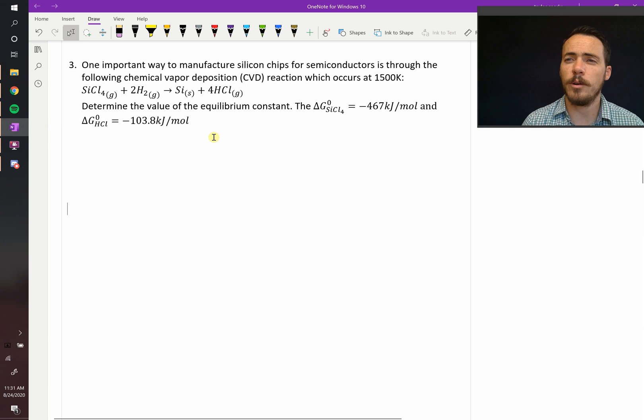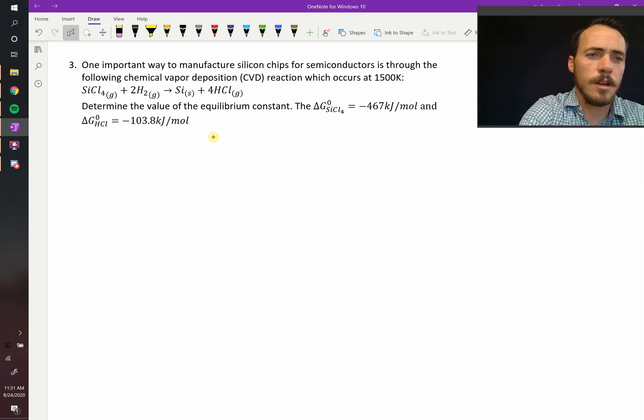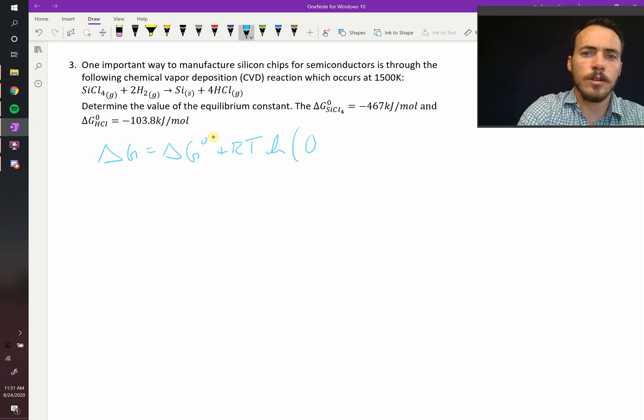Since we already have the chemical equation, the first thing we can do is remind ourselves how to calculate the change in free energy. So that means delta G equals delta G naught plus RT natural log of Q.